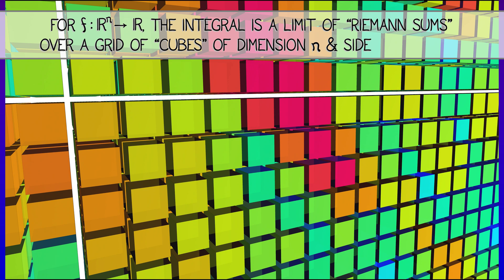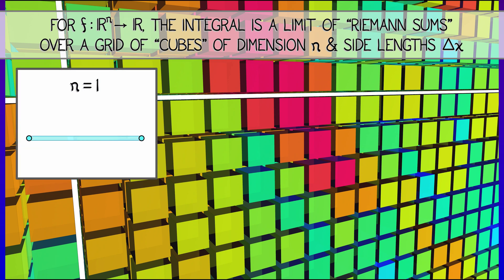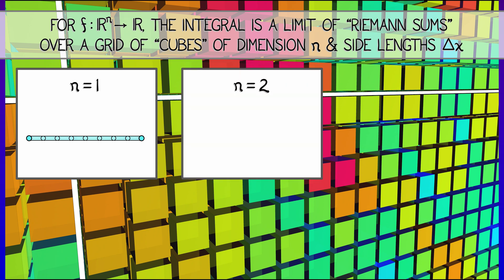Now, what is this going to look like? Well, let's say that f is our integrand on our n. The integral of f is going to be a limit of Riemann sums over a grid of cubes in n dimensions, where those cubes all have side length delta x. This is a straightforward generalization of the one-dimensional case where we had intervals of width delta x.